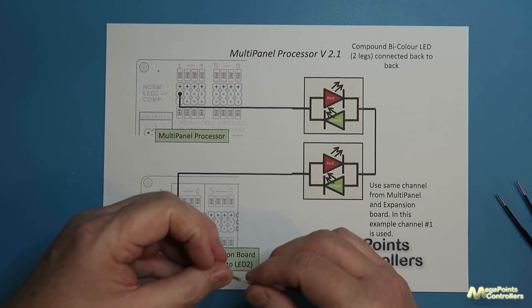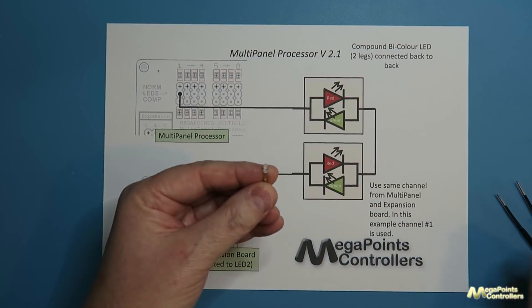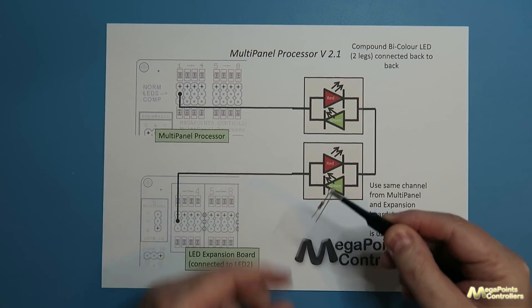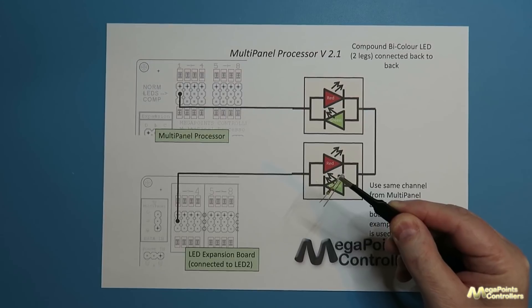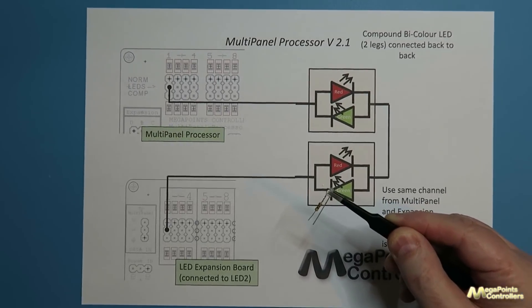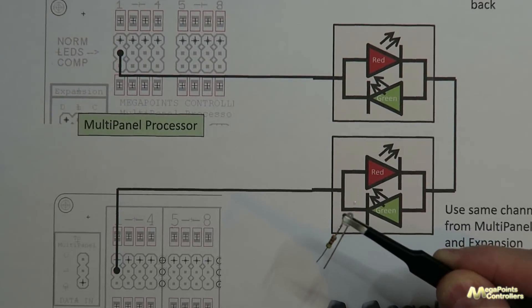To give you an example to show you how this works here's a bi-color LED and I've attached a resistor, a 1k resistor to it so if I zoom in we can see it operate.